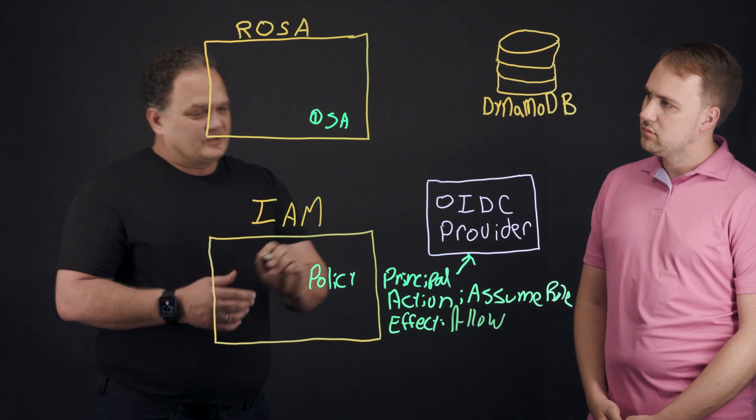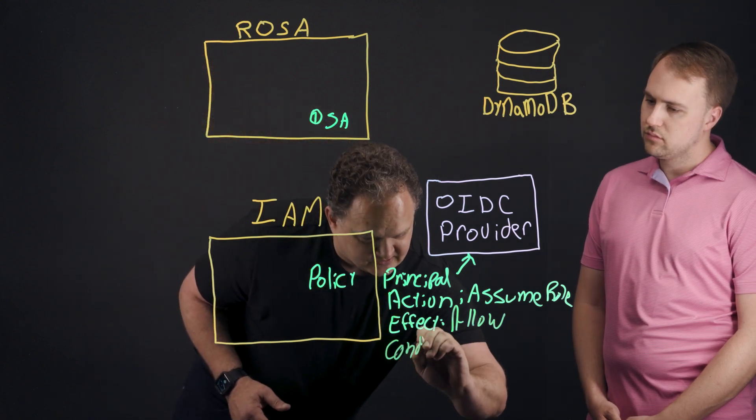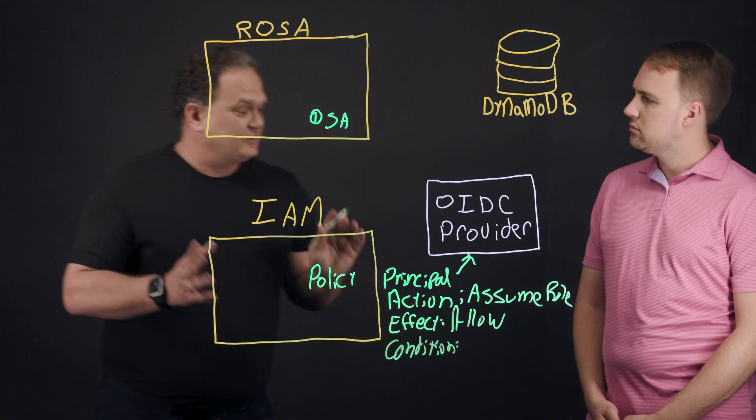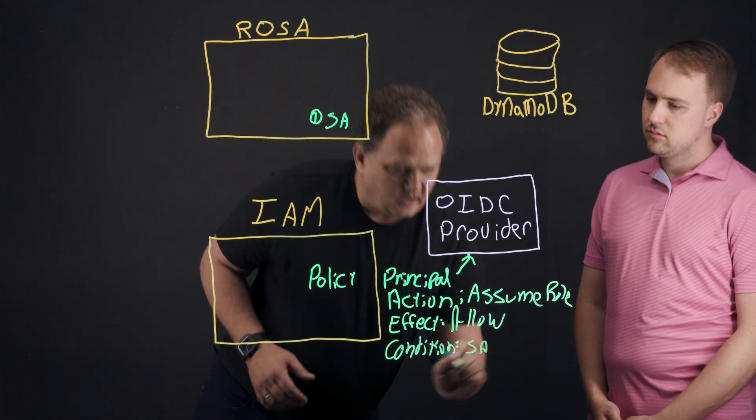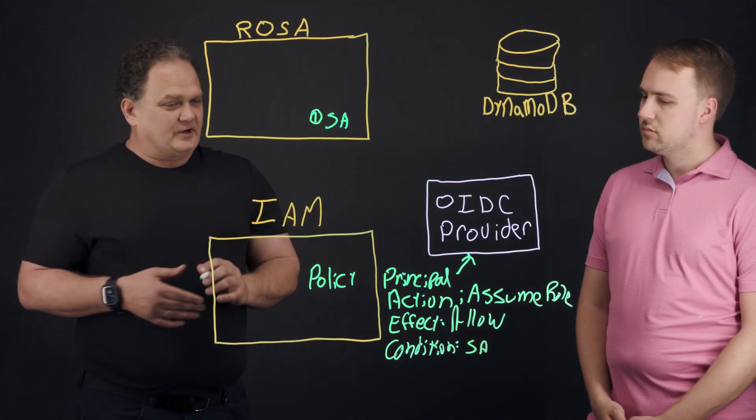And last thing we have is a condition. So a condition says, are there any special circumstances on when this should occur? And we're going to add one that says service account. If the service account is the one that requested it, then this can be done.